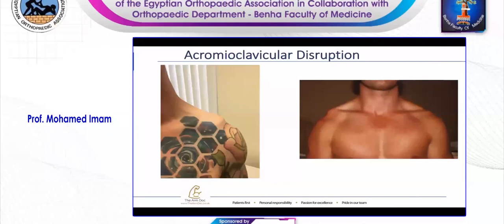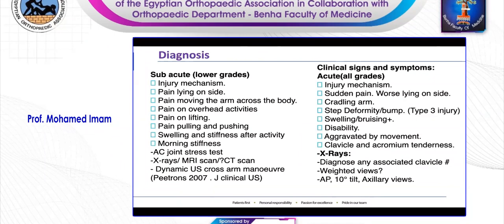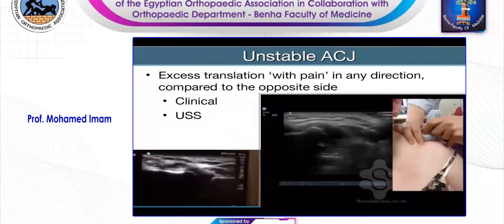Diagnosing these acute obvious injuries is not rocket science. These patients will have sudden pain, cradling arm, obvious deformity, and x-rays might be obvious but not all the time. In some acute or lower grades, it might be hard to define these injuries. You'll find patients having pain on lying on their side, struggling with overhead activity, lifting, pulling, pushing. And sometimes it might be so subtle that only a dynamic ultrasound scan, popularized by Petrons in 2007, is the only modality that can differentiate this type of injury.